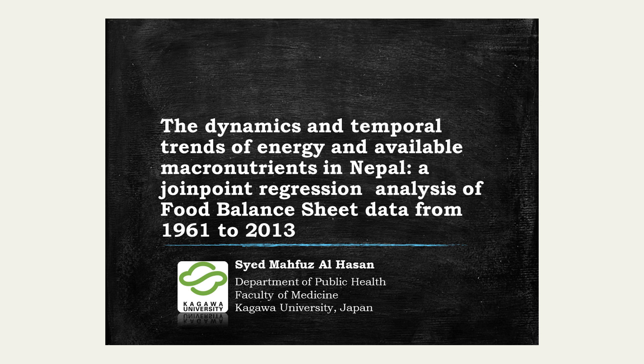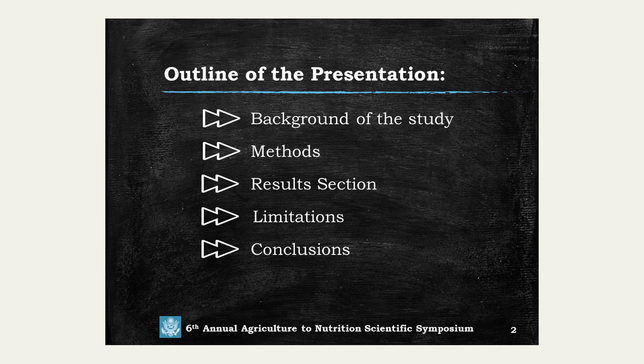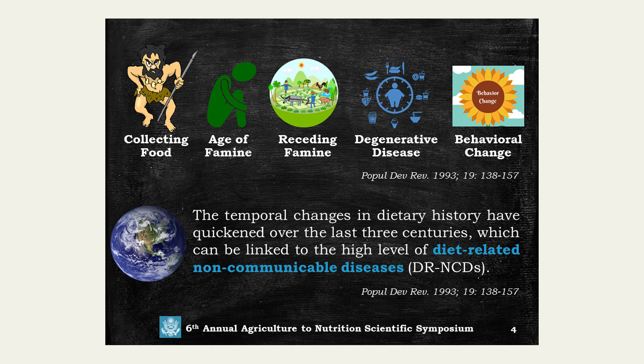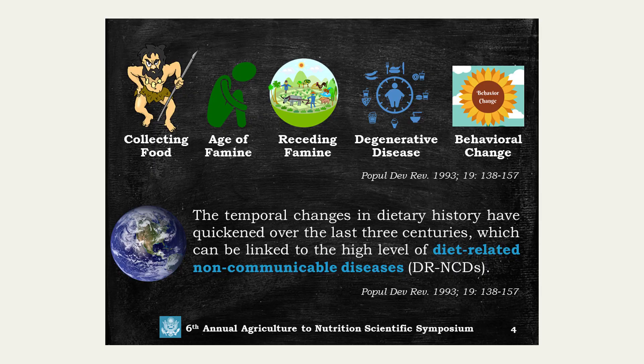This is a joint point regression analysis of the FAO's food balance sheet data. From the emergence of human history, collecting food to the behavioral change which is called nutrition transition. The nutrition transition has five stages, and most of the developing countries are in the degenerative disease stage. Japan and South Africa are the countries in the behavioral change stage. The temporal changes in dietary history have quickened over the last three centuries, gaining momentum just after World War II. This momentum of dietary changes is linked to diet-related non-communicable disease.